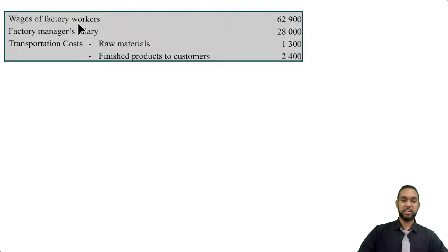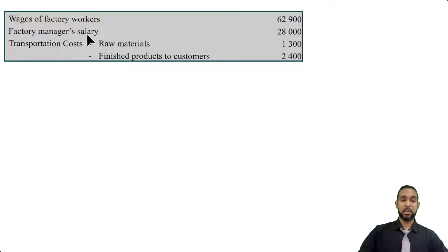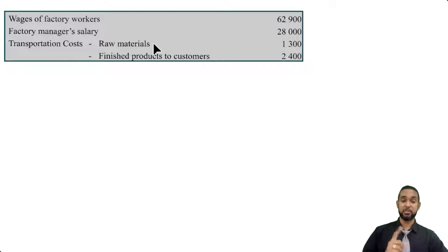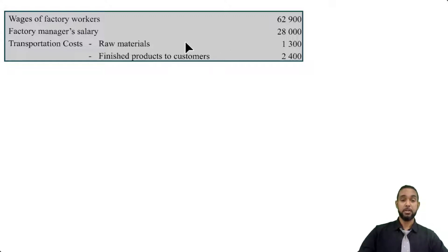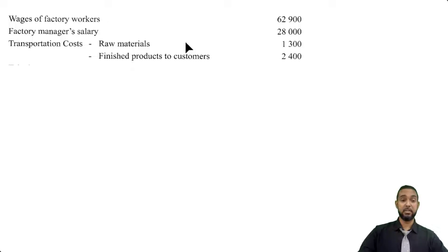We have wages of factory workers — that's direct labor unless otherwise stated. Factory manager salary — that's indirect. Transportation costs on raw materials, which is carriage inwards on raw materials. And transportation of finished products to consumers, which is carriage outwards.